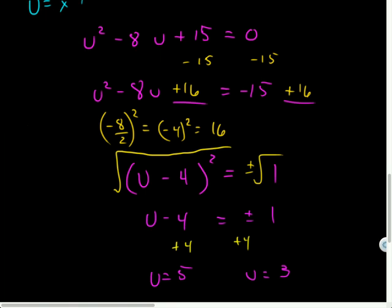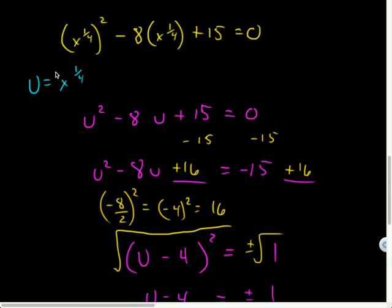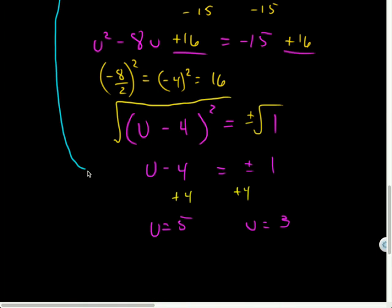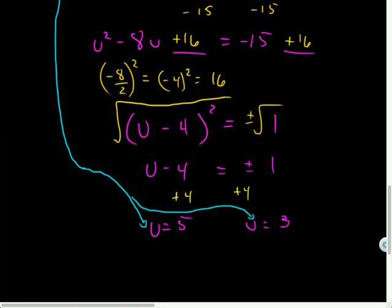And now we just have to plug in our original U here, or what U is equal to. So this is x to the 1 fourth. So I'm going to bring this all the way back in and solve it for the original variable we were interested in. So I get x to the 1 fourth equals 5 and x to the 1 fourth equals 3.